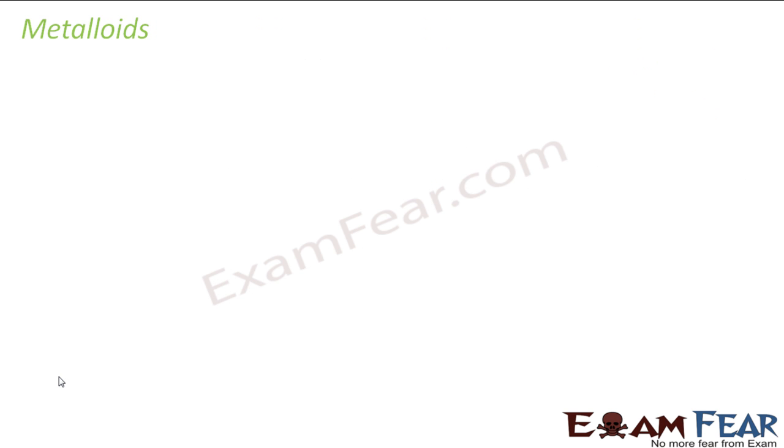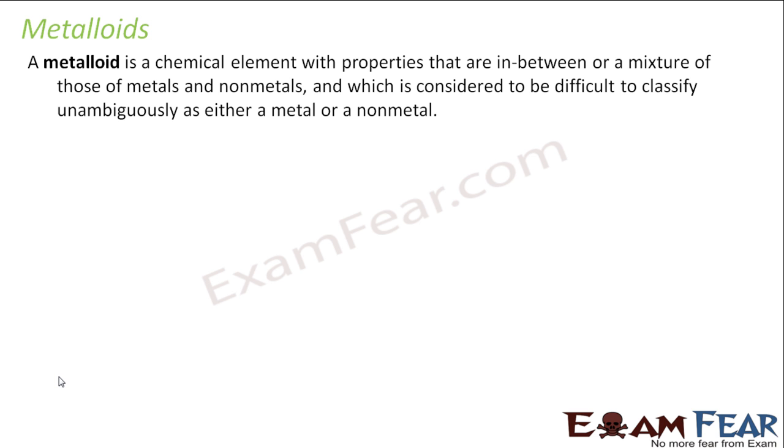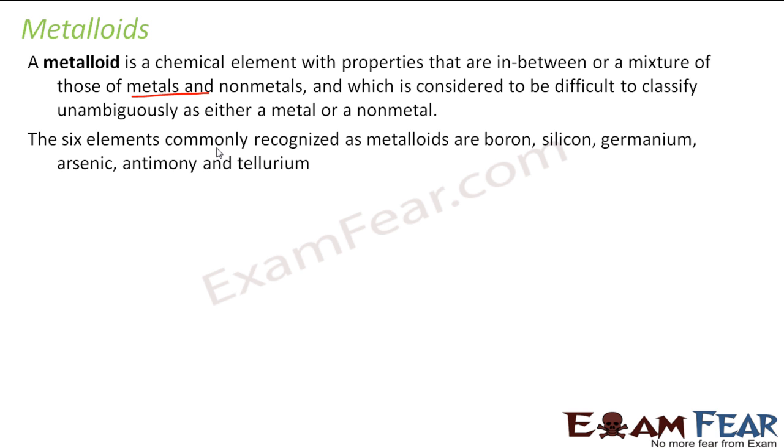I have used this word metalloid. What is metalloid? It is nothing but elements which are neither metals nor non-metals. They do not exhibit the property of metals and non-metals. There is still debate going on which all are metalloids, which all are metals. Generally, the six elements are commonly recognized. I will say commonly recognized. There is no concrete recognition on this. Commonly, Boron, Silicon, Germanium, Arsenic, Antimony and Tellurium are called metalloids. There is still debate on that because some people will say Silicon is a metal, some will say it is a non-metal. But generally, 90% of people are in agreement that these are metalloids because they have properties which are between metals and non-metals. They have the mixture of metals and non-metals and they are difficult to classify as metals or non-metals.